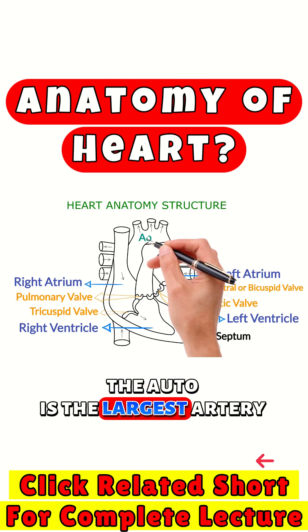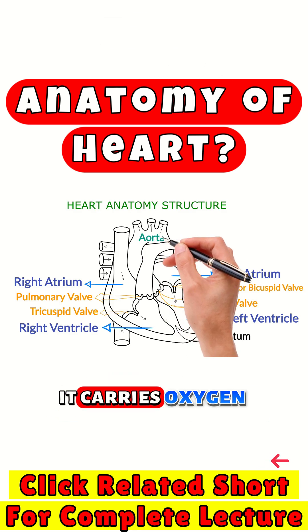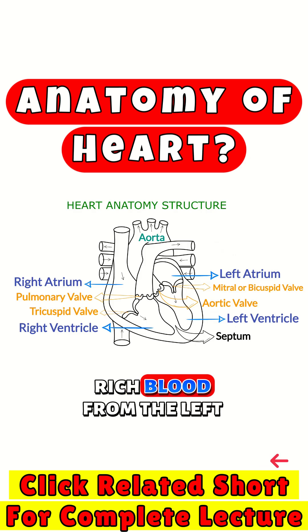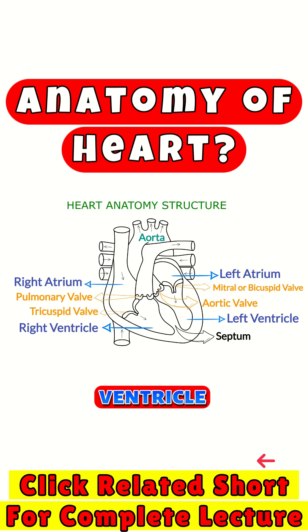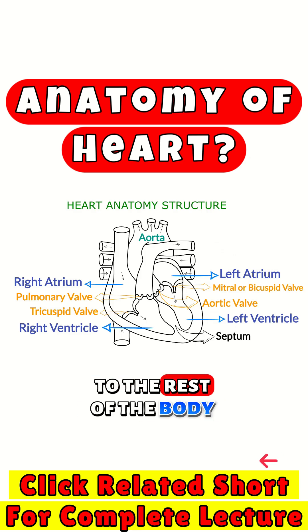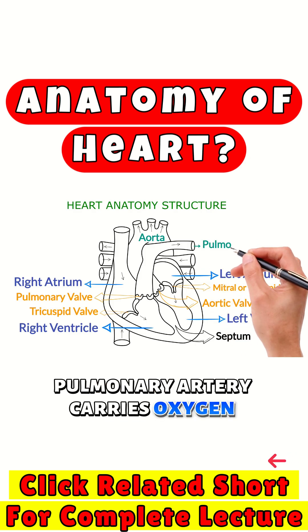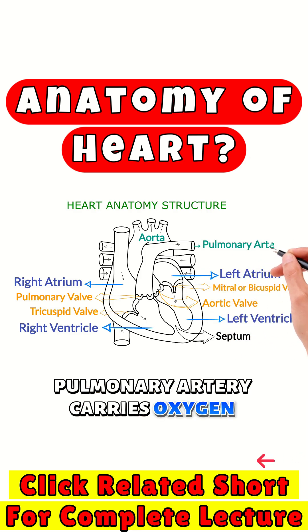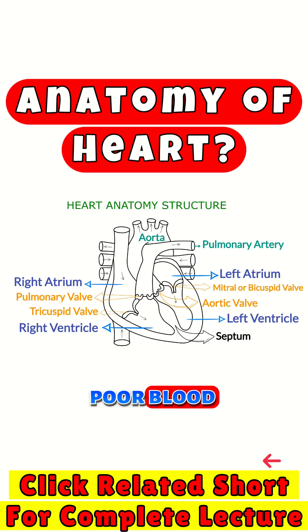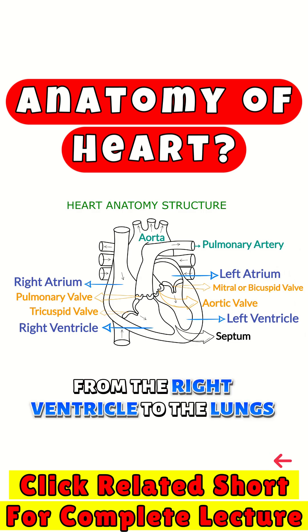The aorta is the largest artery. It carries oxygen-rich blood from the left ventricle to the rest of the body. The pulmonary artery carries oxygen-poor blood from the right ventricle to the lungs.